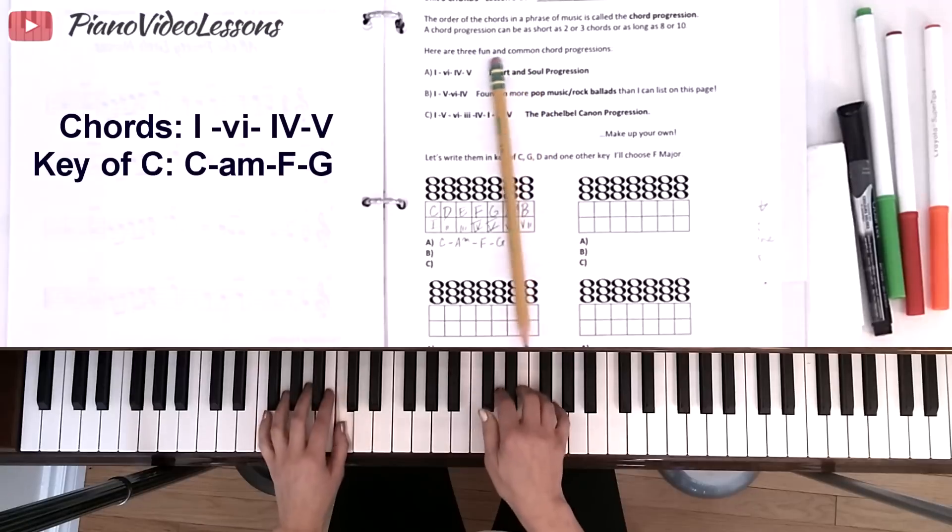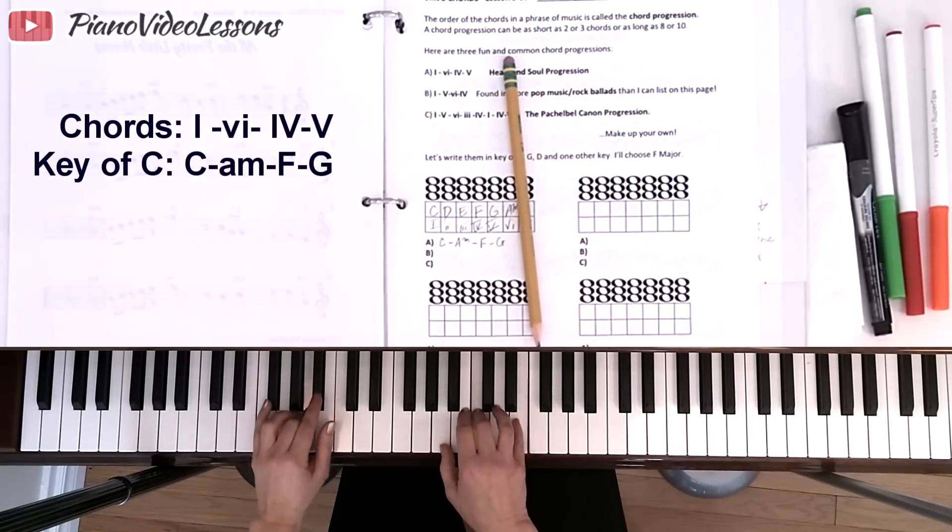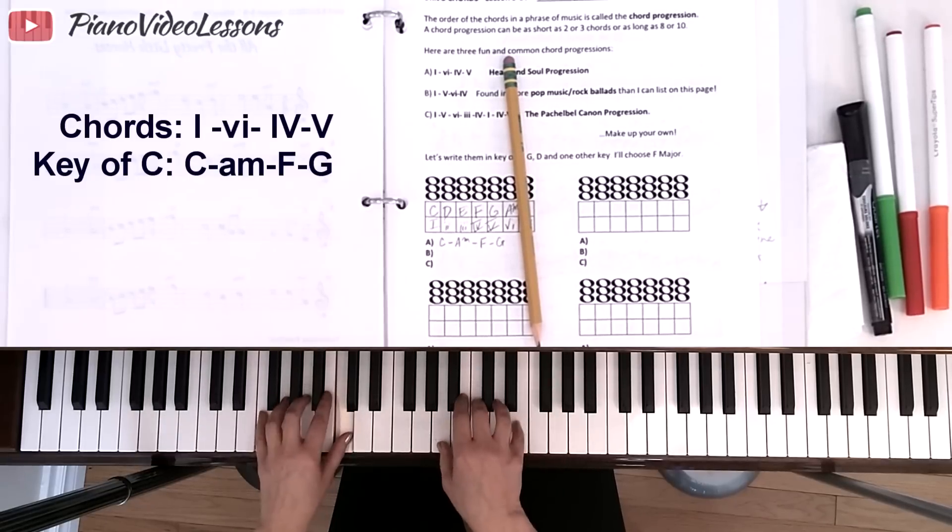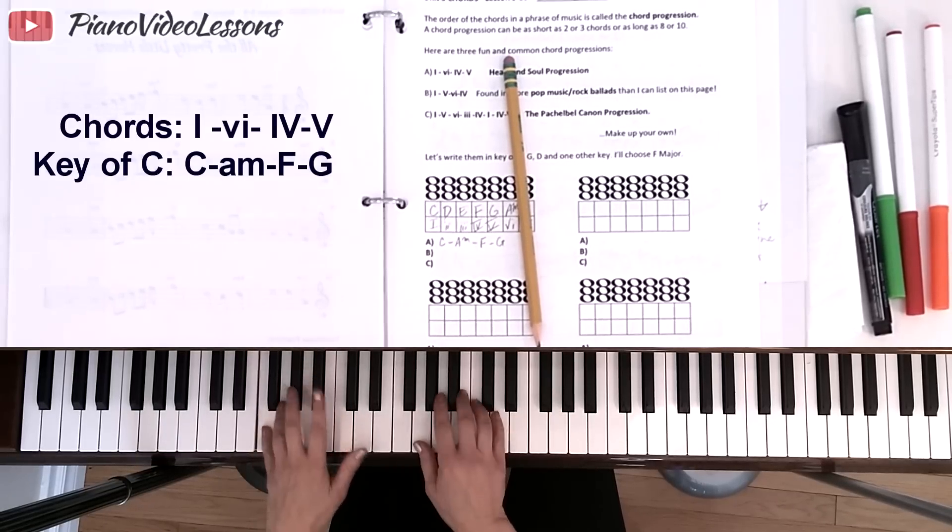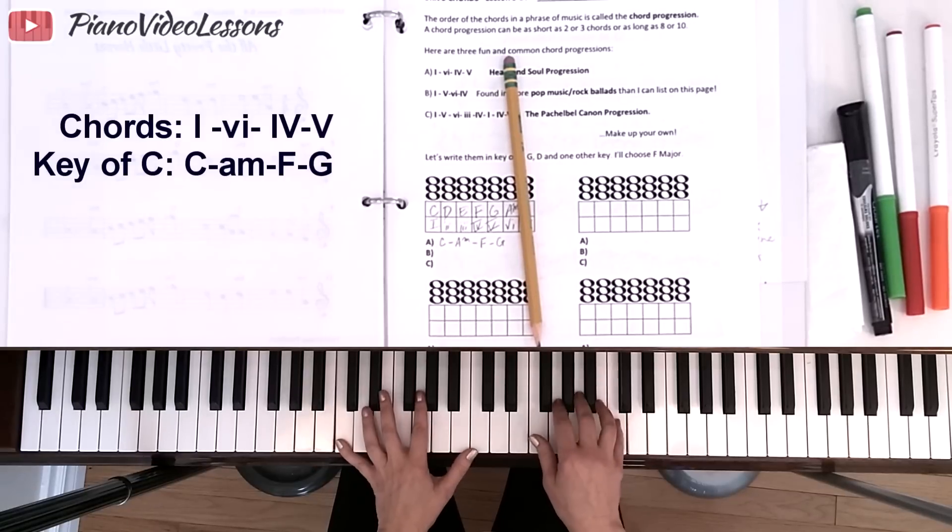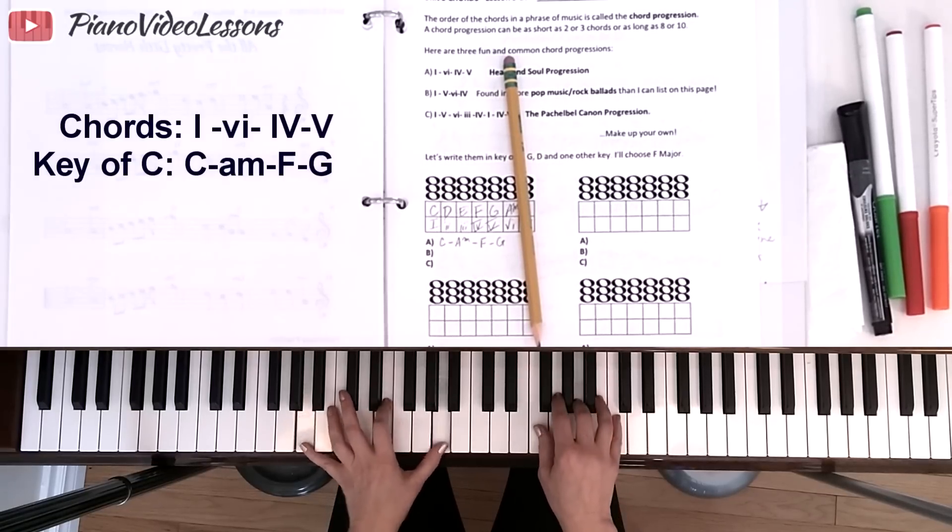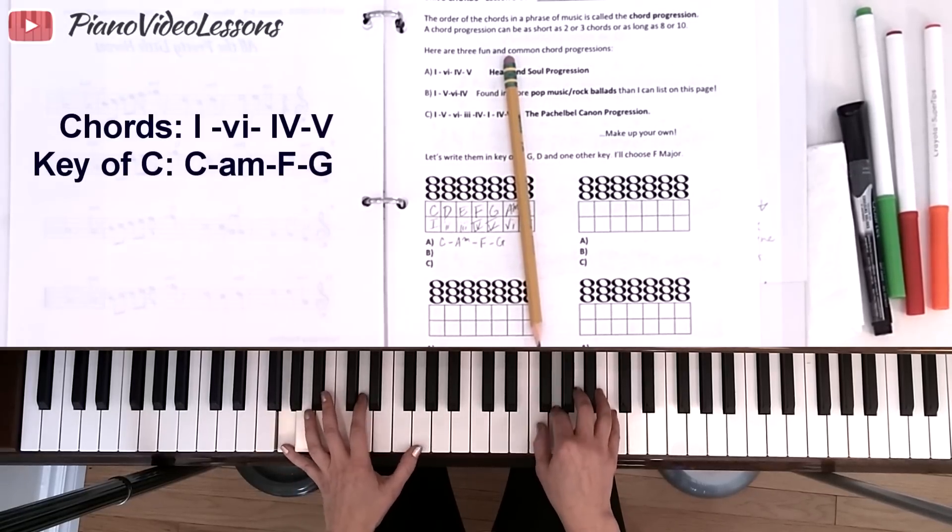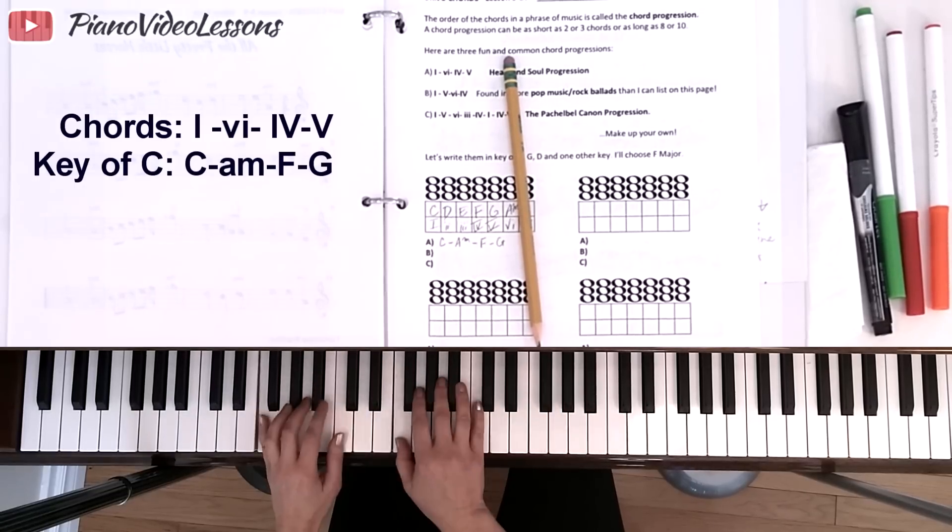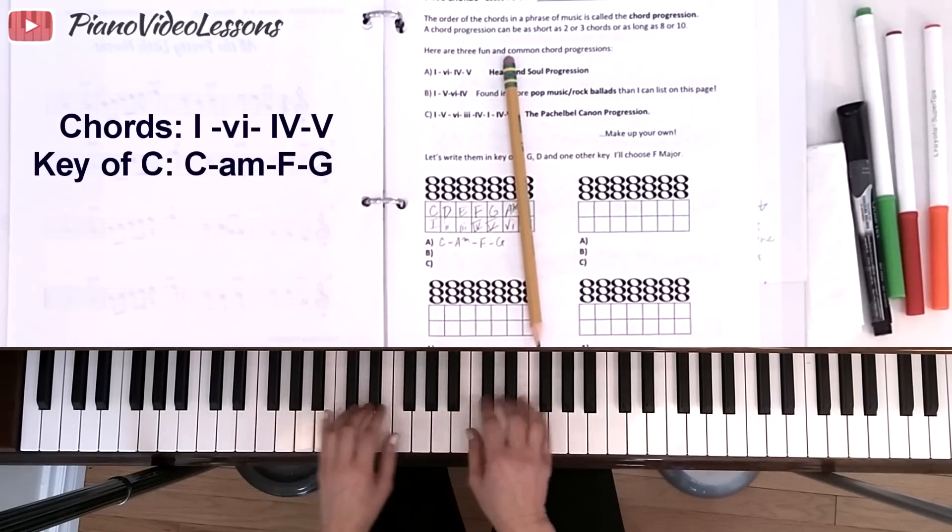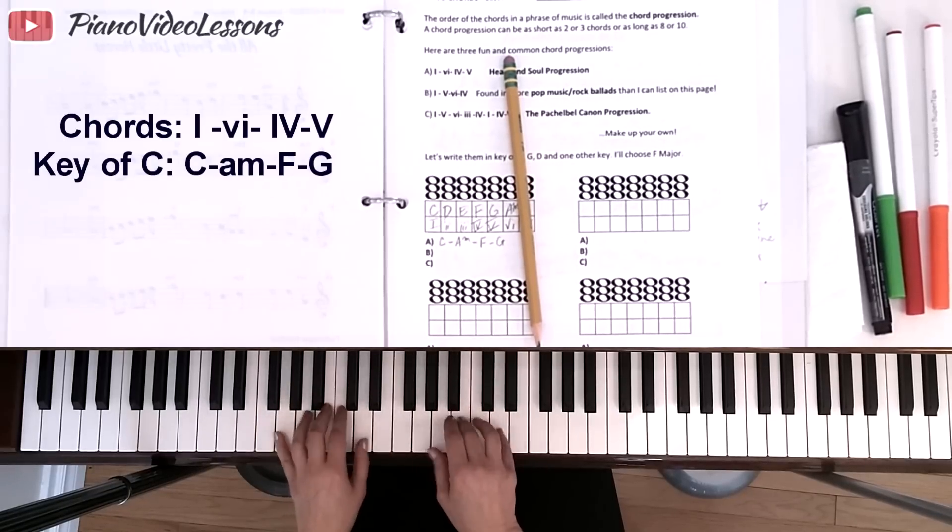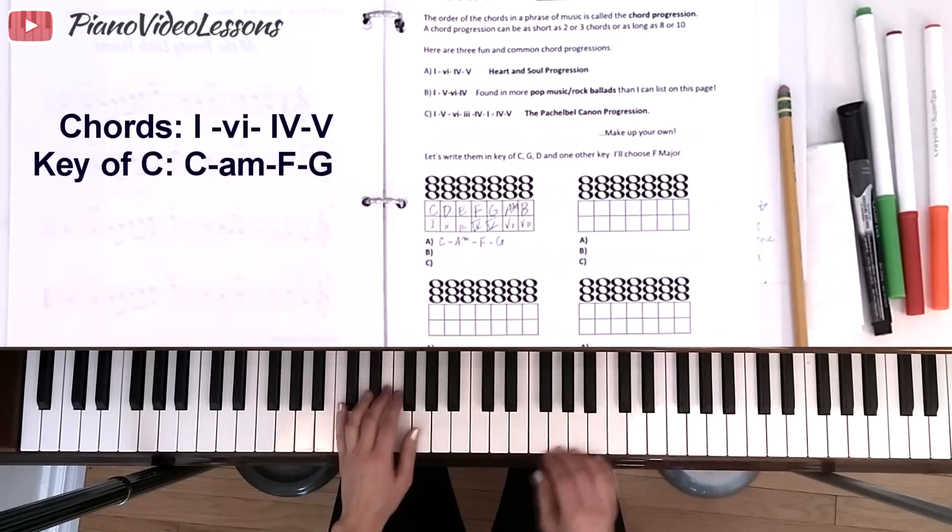So that progression turns to C, A minor, F major, and G. Now you could play this any way at all. You could even break it opposite, to play C, A, F, G. You could use oom-pa-pa's. Not to play Heart and Soul, but to play the progression on its own.